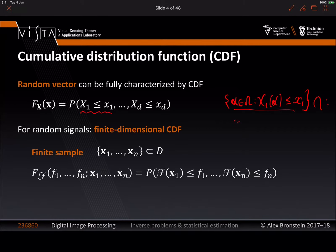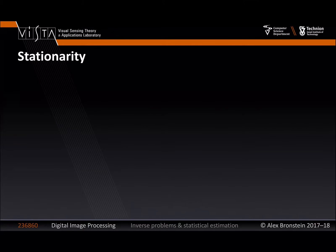We define this finite-dimensional CDF that has the locations of the samples as its parameters. It is a regular CDF of the vector (ℱ(X₁), …, ℱ(Xₙ)). This vector is a random vector sampled from our stochastic process, and it has a CDF. I first select a sample of n points, then think of a comb placed on top of my signal — measuring its values at the points of this comb — arrange them into an n-dimensional vector, which can be described by a regular CDF.